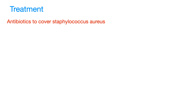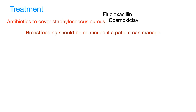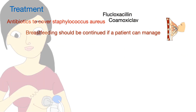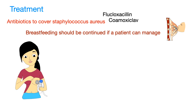The treatment of mastitis includes antibiotics to cover Staphylococcus aureus, which may be flucloxacillin or co-amoxiclav. Breastfeeding should be continued if the patient can manage to do so. If not possible, milk should be drained out with the help of suction.